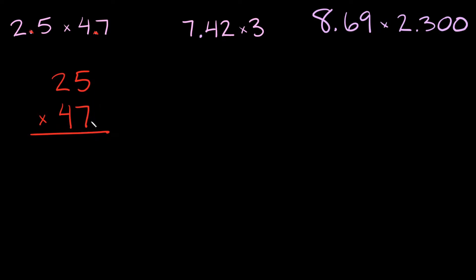So what's 7 times 5? That's 35, so I'll put a 5 here, carry the 3. Then I have 7 times 2 which is 14, and then 14 plus 3 is 17. So now I'm done with my 7. I'll put a 0 right there. Now I'll move on to the 4. So now I have 4 times 5 which is 20, so I'll put the 0 here and carry the 2. And then I have 4 times 2 which is 8, and then 8 plus 2 is 10.